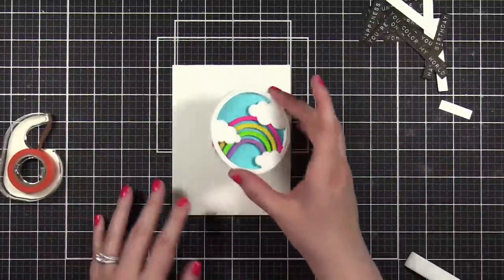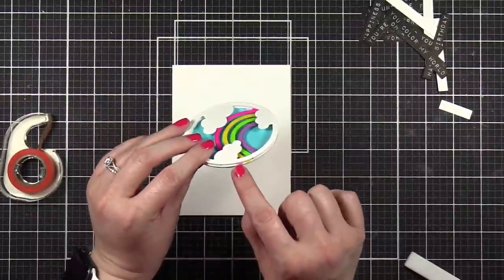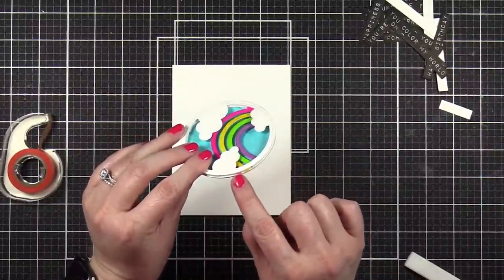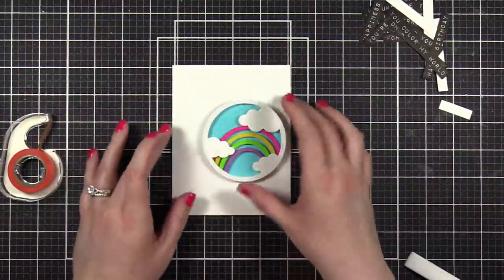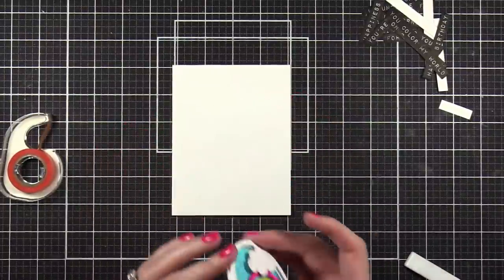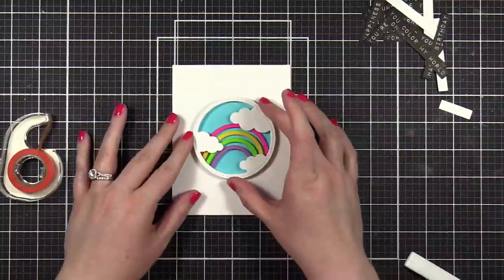This little guy is gonna go right here. You know what is bugging me? I shouldn't have colored those all the way to the edge. See how that's showing? That kind of bugs me, but that's okay, I will get over it. In fact, I might be able to use a white gel pen later when the card is finished to just kind of clear that up.